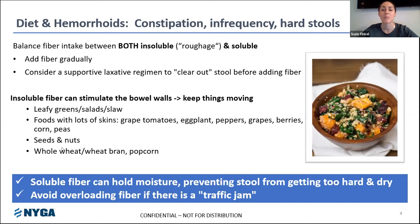Soluble fiber, because it holds moisture, is a great tool for diarrhea, but it can also be a preventative tool for constipation or pebble-like stool. An important note: if you have active constipation, you might want to consider a supportive laxative regimen to evacuate a stool buildup first before adding a bunch of fiber — otherwise you can further back yourself up. Adding more bulk to a traffic jam can make things worse. Really want to clear out any potential stool burden first, then gradually add fiber of these different types so you can get used to it.